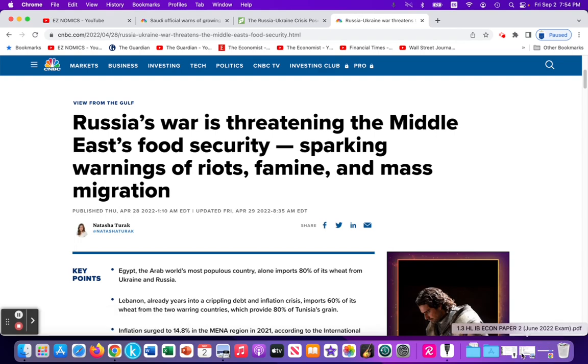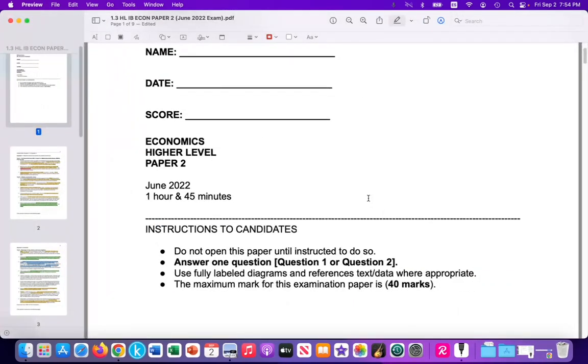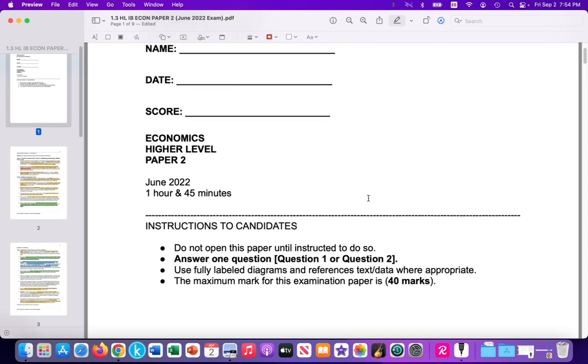So I used those articles to develop a type of Paper 2 exam. And again, the nice thing about Paper 2 is that it gives you examples that you can use on Paper 1, Section B, real-world examples. And also Paper 2s help you get in the habit of dissecting articles for an internal assessment type of assessment.